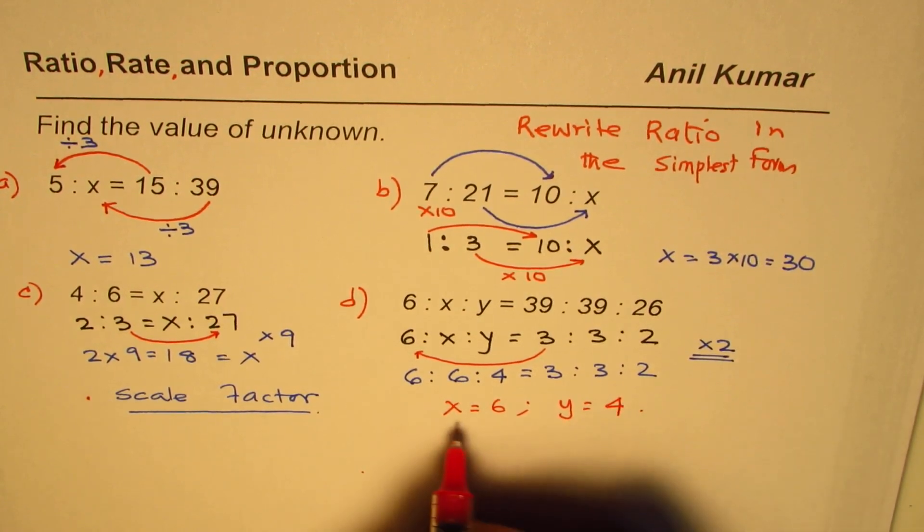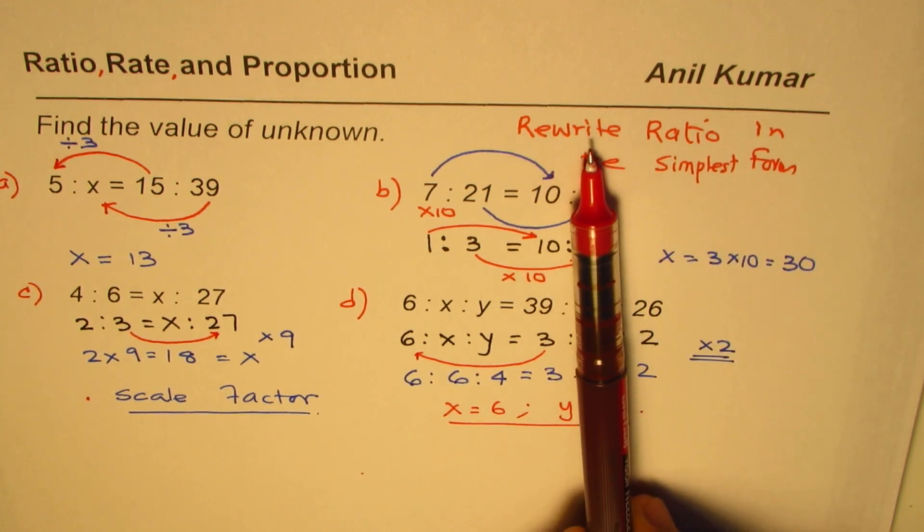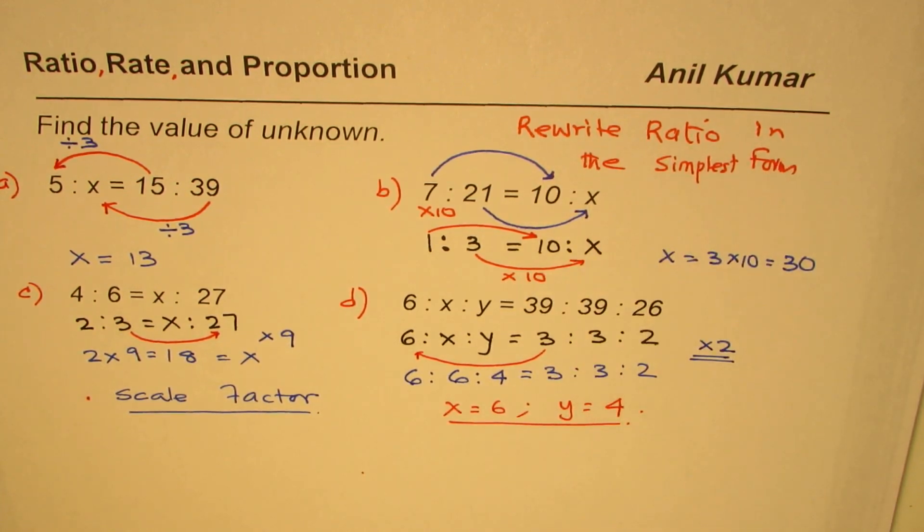So that is how we can solve or find the value of unknown when a ratio is given to us. I hope this exercise helps you to understand that the most important thing here is to find the scale factor. And at times we may have to rewrite the ratio in a simpler form to clearly see the scale factor.